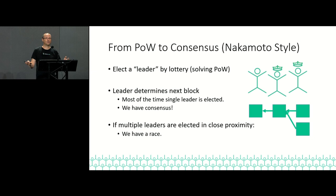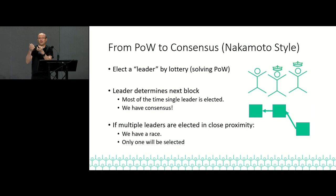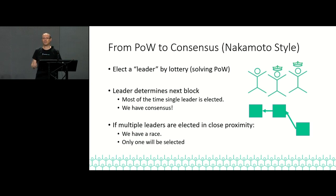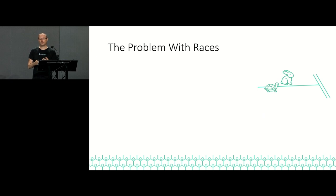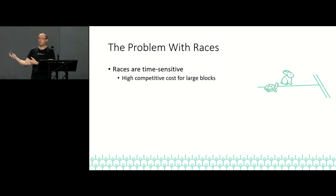The problem is this is all probabilistic — we can't guarantee there's only a single leader every time. Sometimes multiple leaders are chosen at the same time; two people solve the proof of work more or less together. In that case, we have a race. Races are time-sensitive: because it matters who gets there first, I really care about how fast I can get my solution to everyone. This means there's a high competitive cost for large blocks. If I want to increase the block size, it takes longer to transmit, so I'm more likely to lose the race.